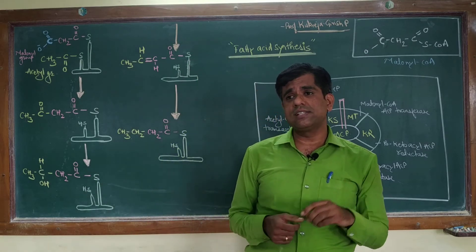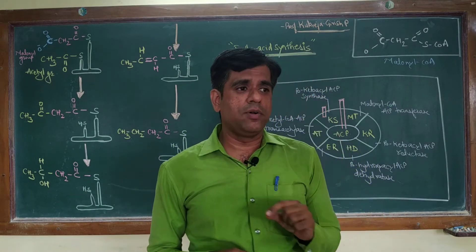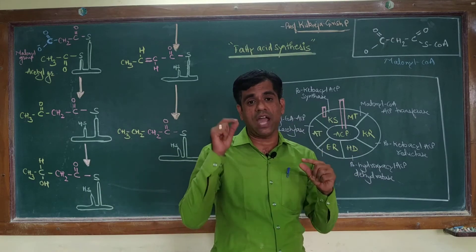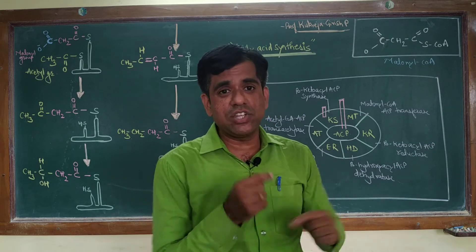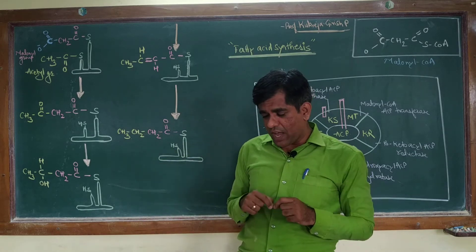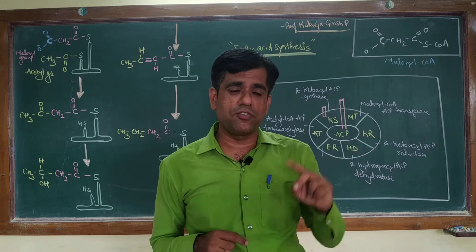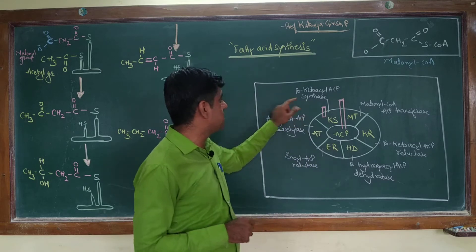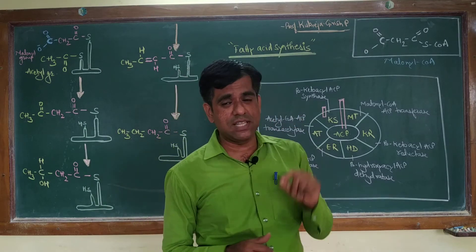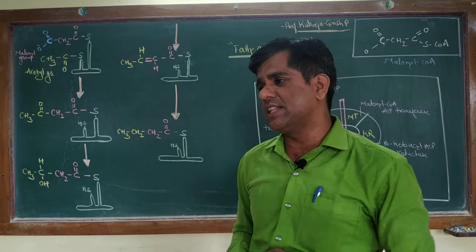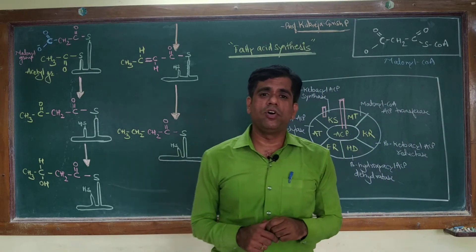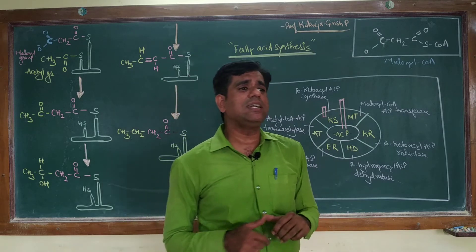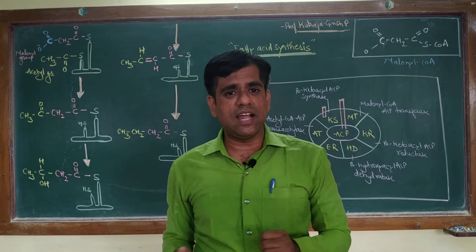Another difference: in beta oxidation it was the SH group of CoASH which was one of the active groups important during the degradation of fatty acids. In synthesis we also have SH groups, but there are two SH groups — one of your ACP (acyl carrier protein) and the other of the enzyme beta-ketoacyl ACP synthase, whose cysteine SH is responsible for activation.